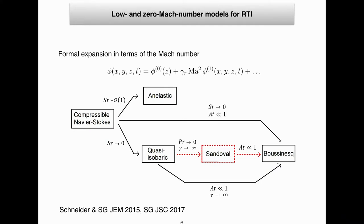For stratification of order one, we get the classic anelastic model. For vanishing stratification in the first case, we get the quasi-isobaric model. If we then take the limit of large gamma and very small Prandtl number, we get the Sandoval model. These two models are quasi-incompressible since the velocity divergence is not exactly zero — there is a source term. In the quasi-isobaric model, this source term depends on gradient of concentration and temperature. By taking the limit of small Prandtl number, the energy equation disappears and we get the Sandoval model. For vanishing Atwood number, we get the Boussinesq model.